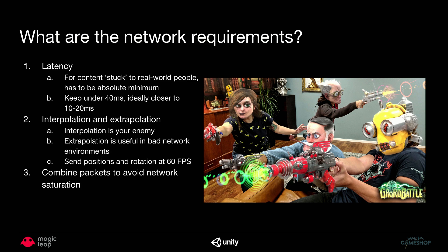Ideally you want to keep your latency down to more like 10 to 20 milliseconds. Interpolation and extrapolation are strategies commonly used in online multiplayer games, but they're actually not so useful when you're doing local mixed reality multiplayer — they're generally just going to result in latency and you'll see your content drifting behind the real world. So one of the first things we did was reduce interpolation for the network solution we're using to an absolute minimum. Extrapolation can be useful, but purely in bad network conditions — when you're dropping packets or latency is an issue — and you generally only want to activate it in those situations, deactivating it again once your network conditions improve.